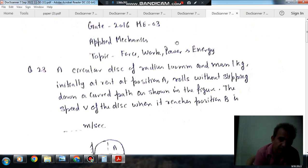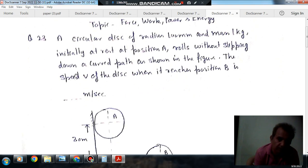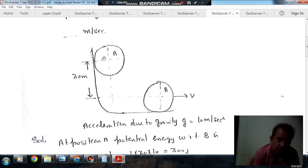Question number 23 from Gate 2016 mechanics. A circular disk of radius 100 mm and mass 1 kg initially at rest at position A rolls without slipping down a curved path as shown in the figure. The speed V of the disk when it reaches position B is dash meters per second. This is position A, this is position B. And position A is 3 meters higher as compared to position B.